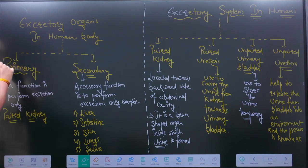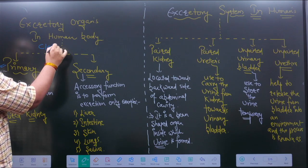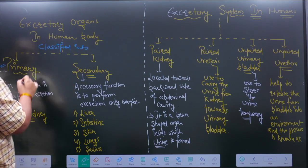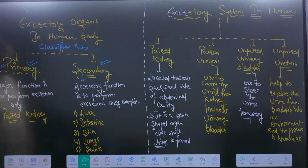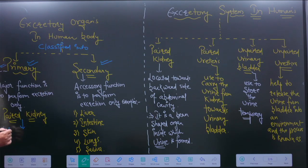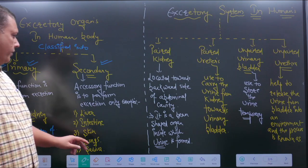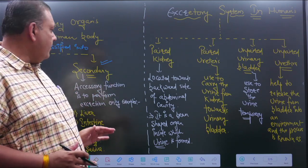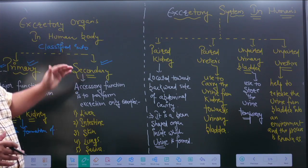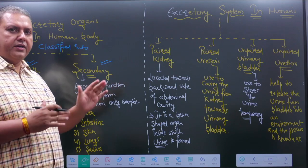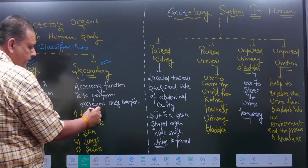When we discuss the excretion organs present in the human body, we classify them into two main parts: primary excretion organs and secondary excretion organs. Primary excretion organs have the main function of removing metabolic waste from our body — for example, the paired kidneys, which help in the formation of urine. Secondary excretion organs are accessory excretion organs whose main function is different, but along with their main function they also perform excretion.